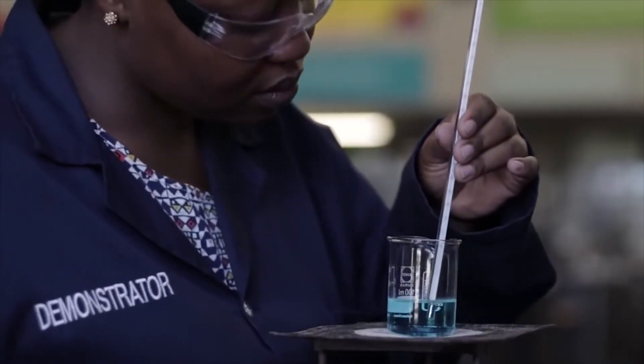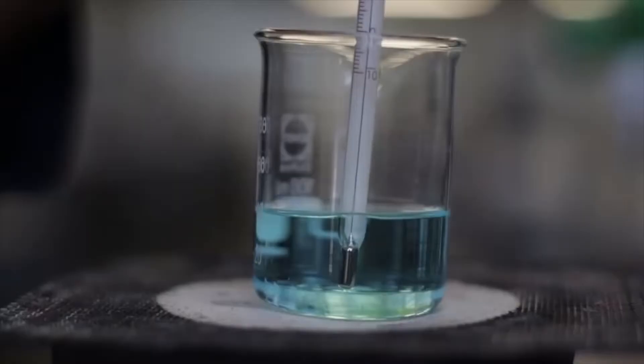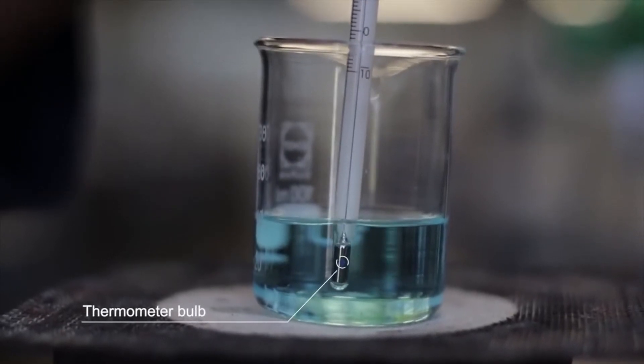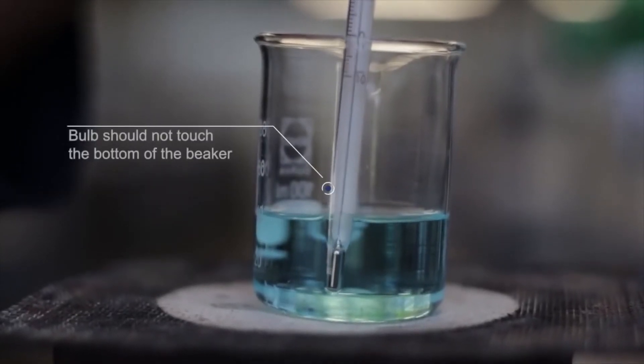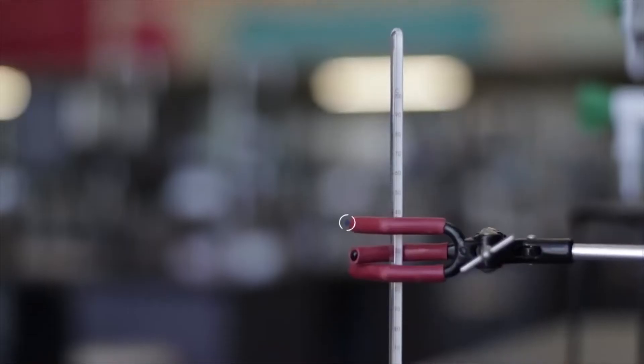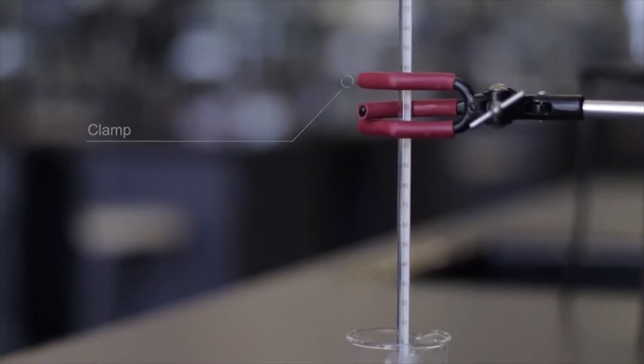A thermometer measures the temperature of a solution. The bulb of the thermometer should be immersed in the solution and the bulb should not touch the bottom of the glassware. If needed, the thermometer can be secured with a clamp.